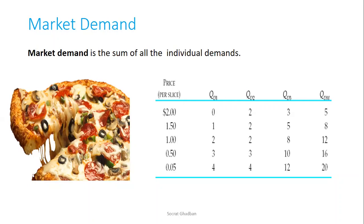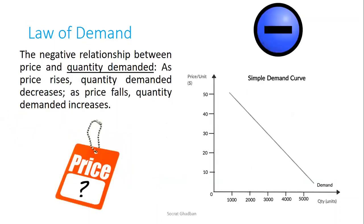This is because consumers will benefit from the decrease in price in order to consume more. This brings us to the law of demand — the negative relationship between price and quantity demanded. As price rises, quantity demanded decreases; as price falls, quantity demanded increases. To illustrate this on the graph, at a price of $10 we have quantity demanded of 5,000. If the price increases from $10 to $20, the quantity demanded decreases from 5,000 to 4,000, demonstrating this negative relationship.